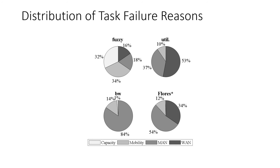We can ignore task failure due to mobility since it cannot be prevented by the edge orchestrator, and the amount of failed tasks from mobility is similar for all algorithms. A task cannot be executed if the utilization of a virtual machine is too high to accept offloaded tasks, or if the network bandwidth is not sufficient to transfer the input or output of the task. The bandwidth-based solution loses most tasks because of metropolitan area network congestion. The utilization-based method causes too much packet loss on WAN after edge servers become congested. Our approach can balance both computing and networking resources better than its competitors.